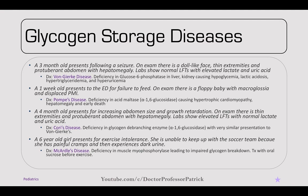Moving to glycogen storage diseases, a three-month-old presents following a seizure. On exam, there's a doll-like face with thin extremities and a protuberant abdomen with hepatomegaly. Labs show normal LFTs and elevated lactate and uric acid. This is von Gierke's disease, or glycogen storage type 1 — a deficiency in glucose-6-phosphatase in the liver and kidneys. It can cause hypoglycemia, lactic acidosis, hypertriglyceridemia, and hyperuricemia.